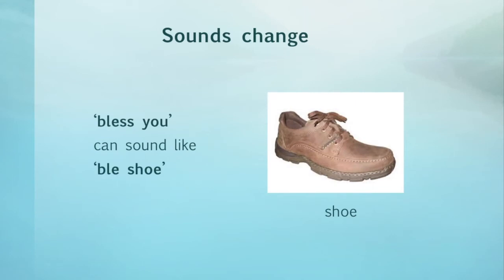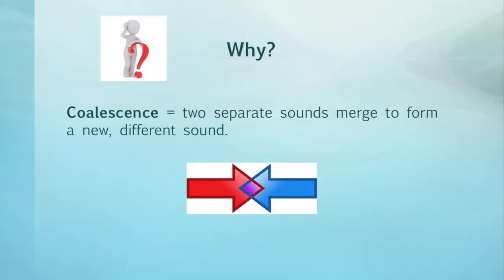When spoken together in connected speech, the words "bless" and "you" can sound like "bleshu", which can be confusing to English language learners because "shoe" is a completely different word. So why do the sounds change like this? It's due to a feature of connected speech called coalescence, which is what happens when two separate sounds merge to form a new, different sound.